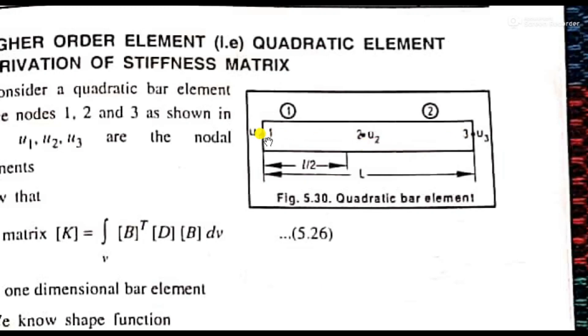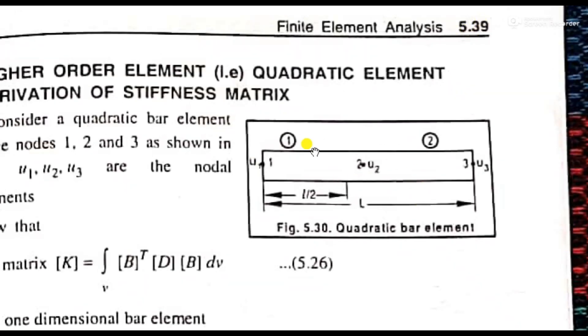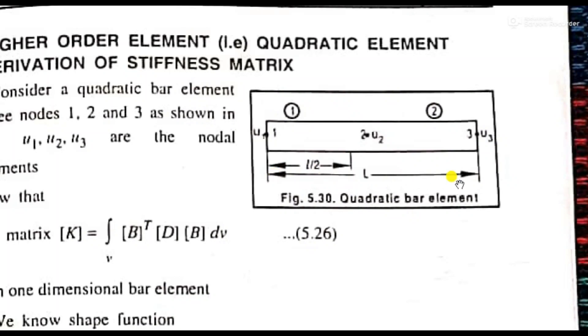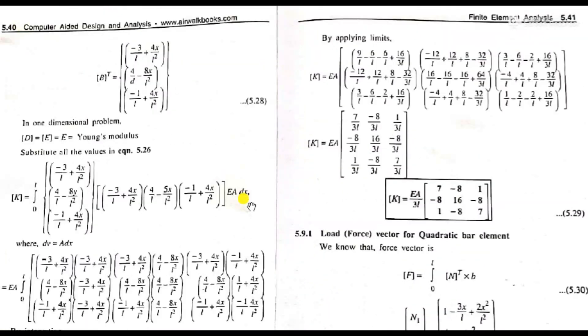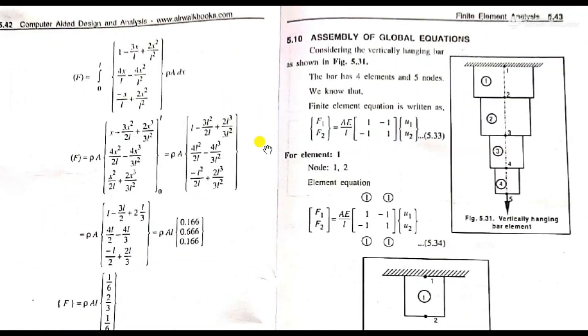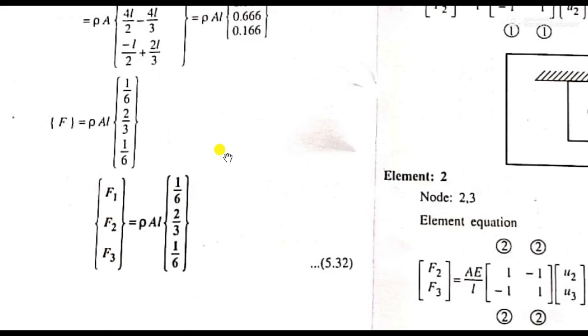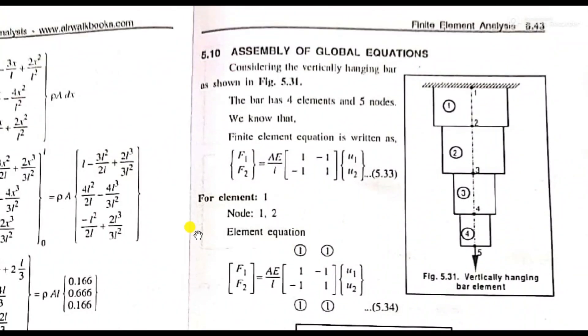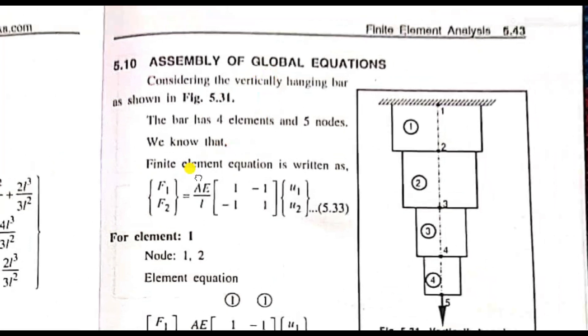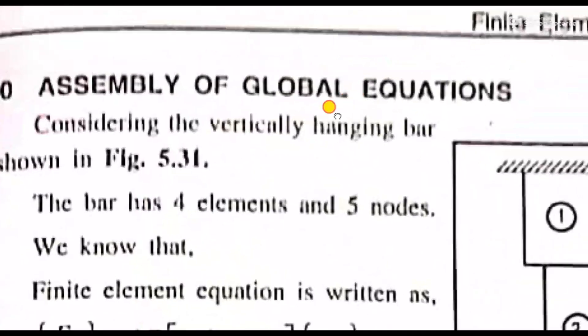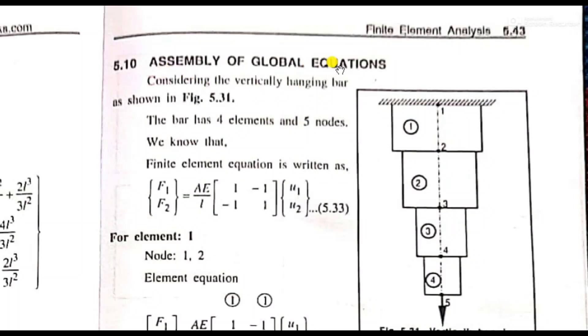Referring to page 5.31, the figure shows nodes 1, 2, and 3. We have three points labeled 1, 2, 3, with degrees of freedom U1, U2, U3 at each node. The total length L is divided between the nodes as shown in the figure.